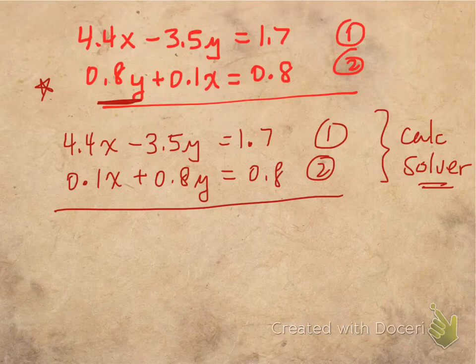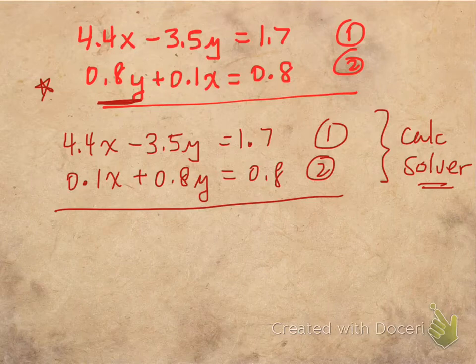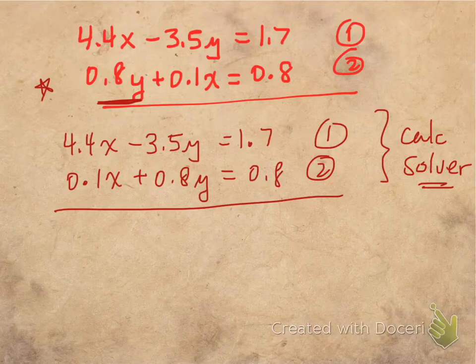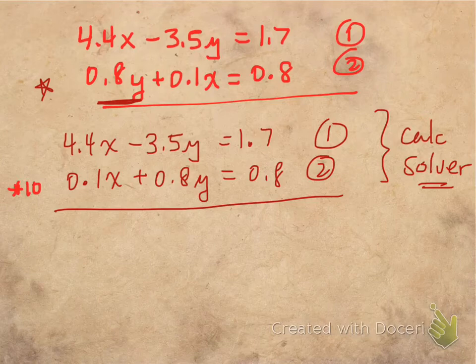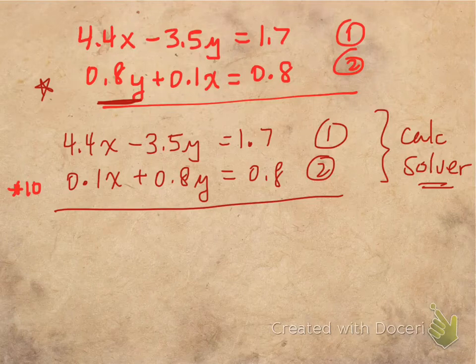Now one thing that I would like to avoid is maybe the decimals here. So why don't we just multiply both sides of the equation by 10 for equation 2. If I multiply everything by 10, I will essentially move the decimal point over one place and I won't have any decimal places.